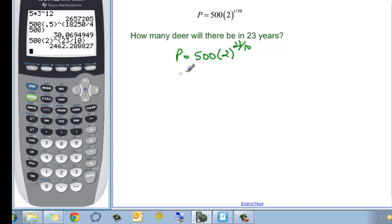And we find out that there is 2,462. Let's just say, because I really don't want parts of deer. Let's say there's approximately 2,462 deer in 23 years.